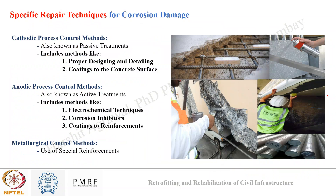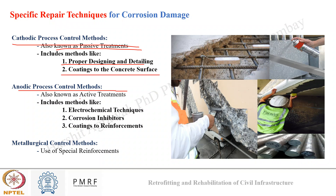For cases where severe damage has occurred at the rebar level with corroded reinforcement and concrete core degradation, corrosion protection measures are needed. We discussed cathodic process control methods — passive treatments — including proper designing, detailing, and coating the concrete surface. We also discussed anodic process control — active treatments — including electrochemical techniques, corrosion inhibitor use, and coating reinforcement. Finally, metallurgical control methods involving use of special reinforcement like corrosion-resistant steel and stainless steel were covered.